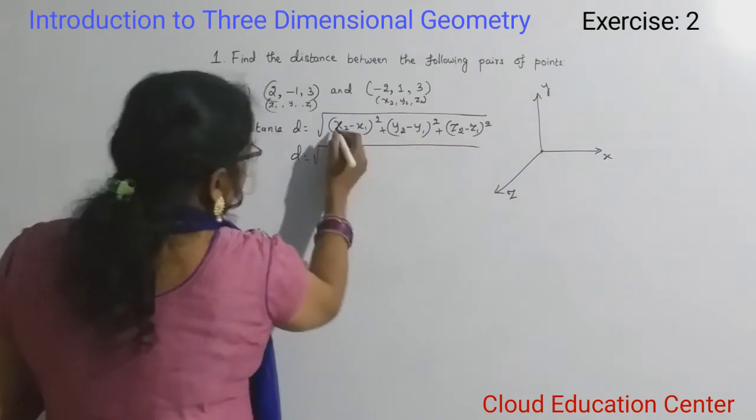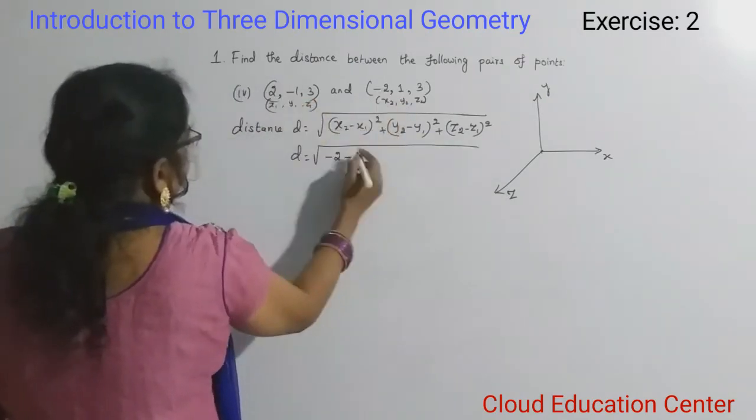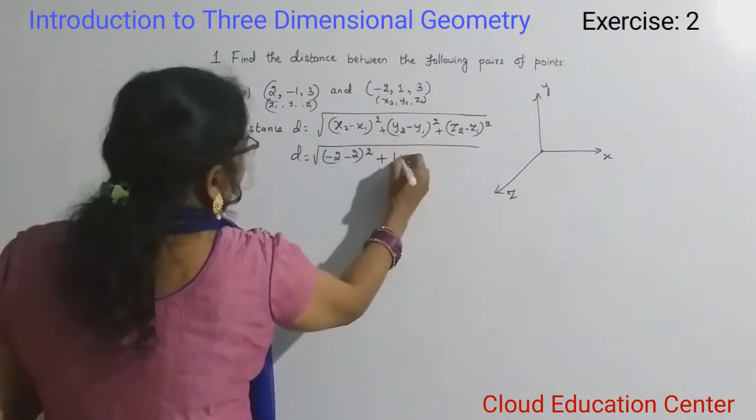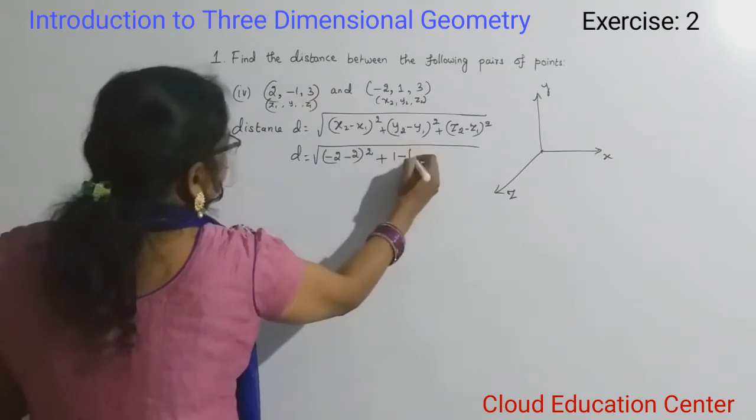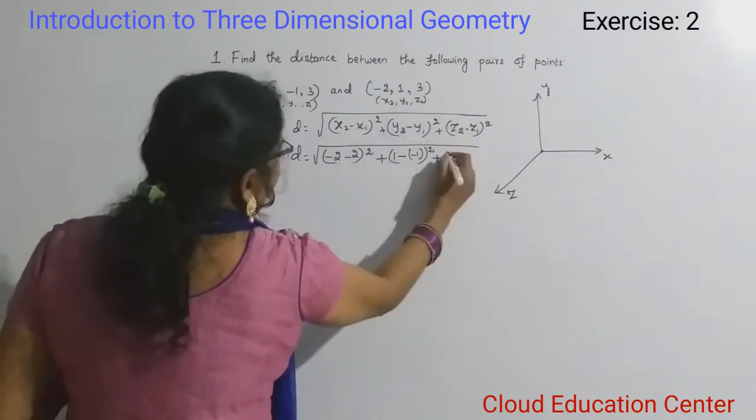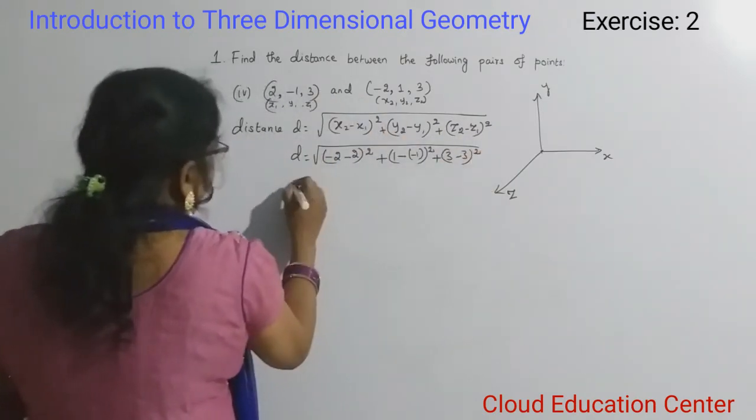D equals square root of: x2 is minus 2, minus x1 is 2, the whole square, plus y2 is 1, minus y1 is minus 1, the whole square, plus z2 is 3, minus z1 is 3, the whole square.